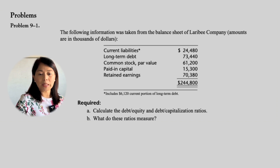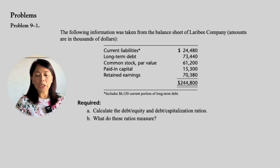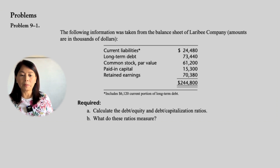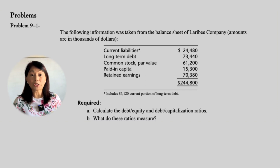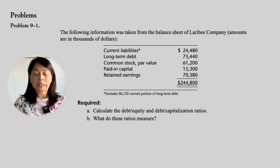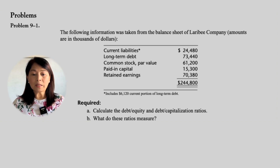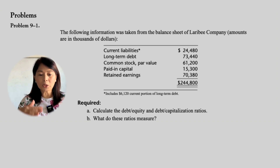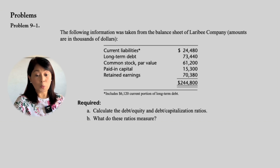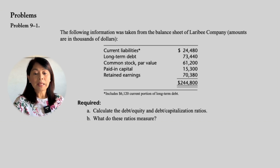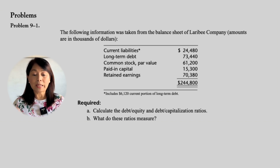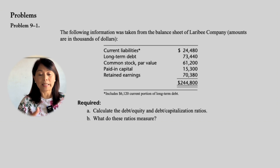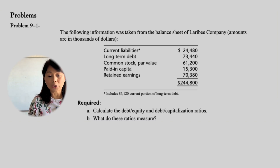The following information was taken from the balance sheet of Larry B Company. Amounts are in thousands of dollars: current liabilities, long-term debt, common stock, paid-in capital, retained earnings. We are being asked to calculate the debt over equity ratio, the debt-equity ratio, and the debt capitalization ratios.